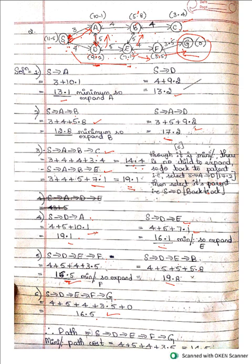The solution path is S→D→E→F→G with a total path cost of 16.5. A* also supports backtracking — whatever path was not yielding a solution, we backtracked to the starting node and computed a new path. Hope you understood. Please don't forget to subscribe, like, share, and comment.